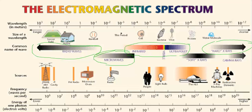Radio waves are long waves — a wave goes up and down, and the distance between the two peaks is the wavelength. The wavelength here is 10 to the 3, which is 1,000 meters long. On the other side, for hard x-rays and gamma rays, the wavelength is only 10 to the minus 12, which is very, very short.